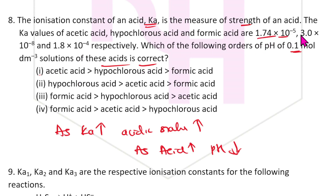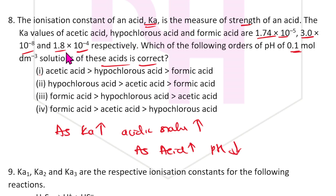The Ka values given are: 1.74×10⁻⁵ and 1.8×10⁻⁴. Formic acid has the highest Ka value, so it will have the lesser pH. Formic acid has lesser pH, acetic acid (Ka = 1.75×10⁻⁵) has higher pH. The answer for this question is the second option.